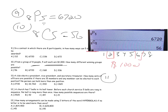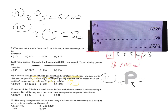Problem eleven: a club elects a president, vice president, and secretary-treasurer — three different job titles. In your notes you should have that when problems talk about job titles, it's always permutations. We have 15 members and three job titles, so this is 15P3, or 2,730 ways.